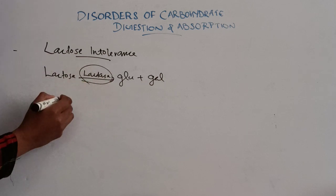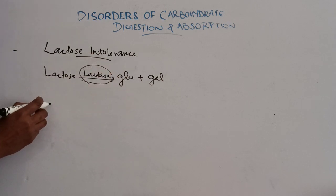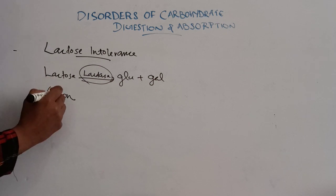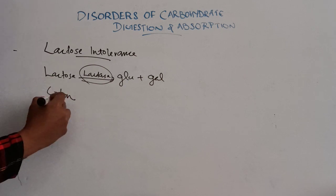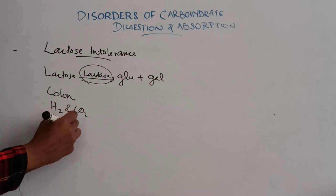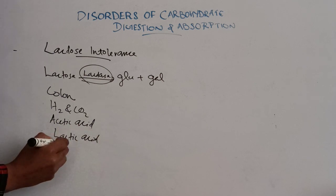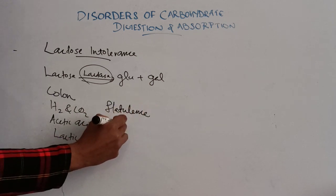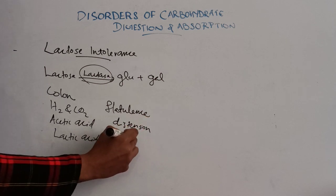If there is deficiency of this enzyme lactase, then lactose cannot be converted to glucose and galactose. Because of this, lactose enters the colon, where it is fermented by bacteria and forms various compounds like hydrogen and carbon dioxide gases, then acetic acid, lactic acid, etc. It results in flatulence, distension, and abdominal cramps.